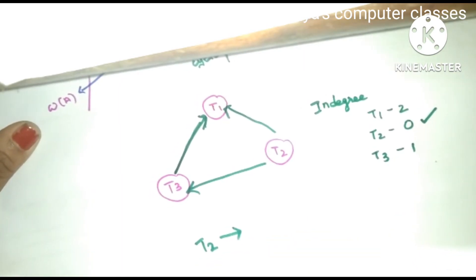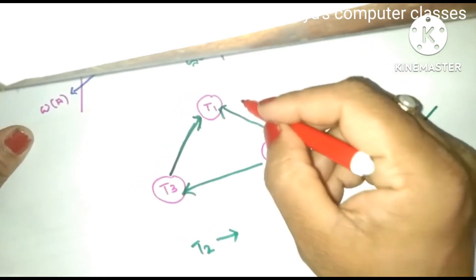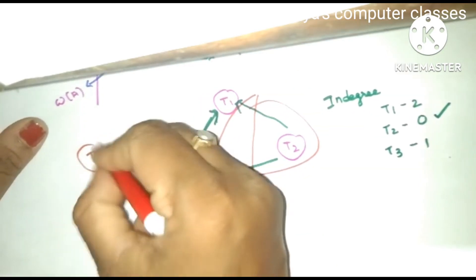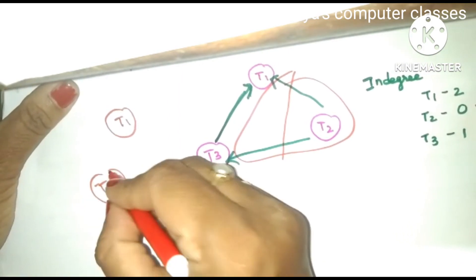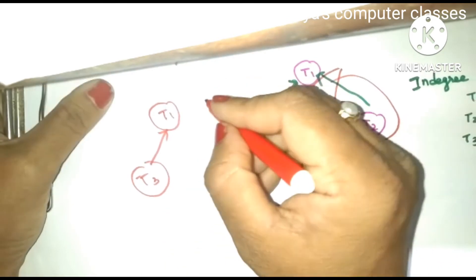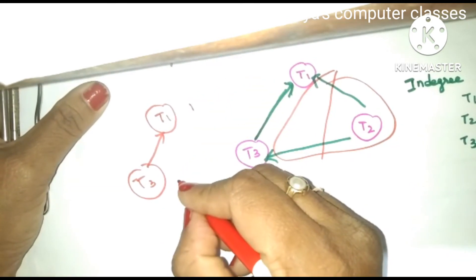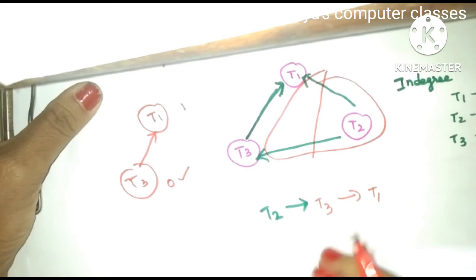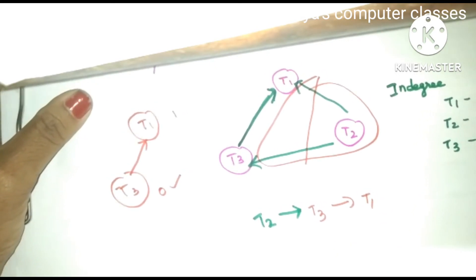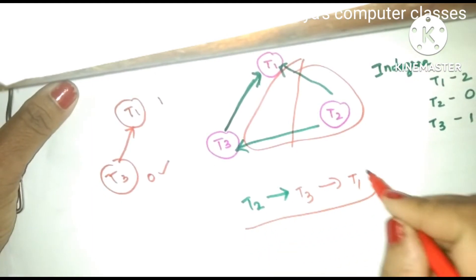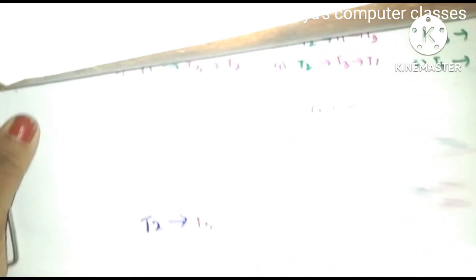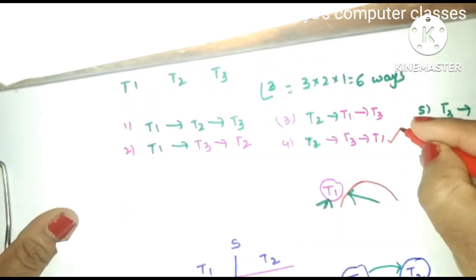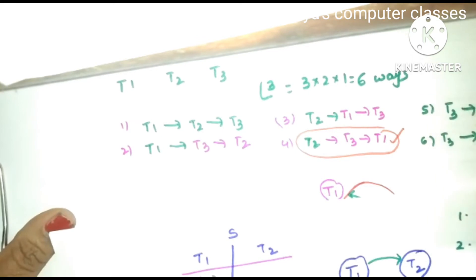Once T2 is selected, remove all edges going out from T2. What remains is T1 and T3. Now find in-degree again: in-degree of T1 is 1, in-degree of T3 is 0. So select T3 next, then T1. The resulting serial schedule order is T2, T3, T1.